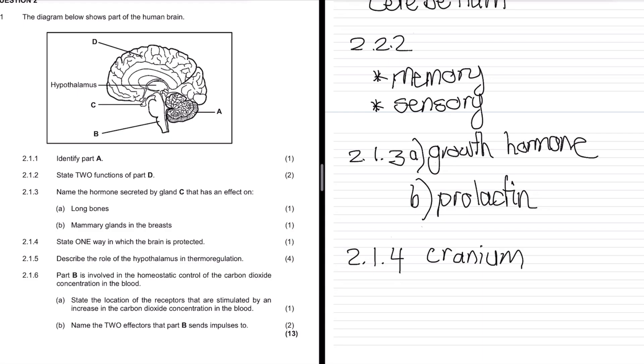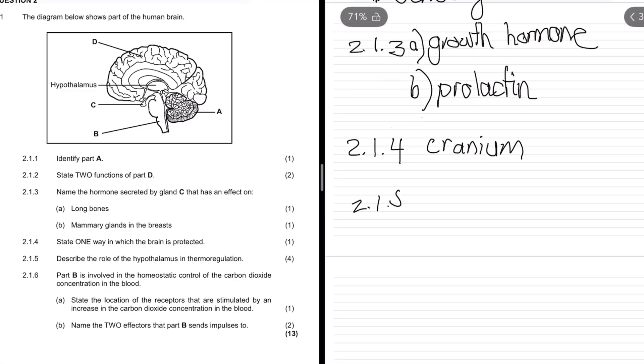Next is 2.1.5 - describe the role of the hypothalamus in thermal regulation. Thermal regulation has to do with the ability to regulate heat. We need to remember the main gland for heat, which is our sweat glands.